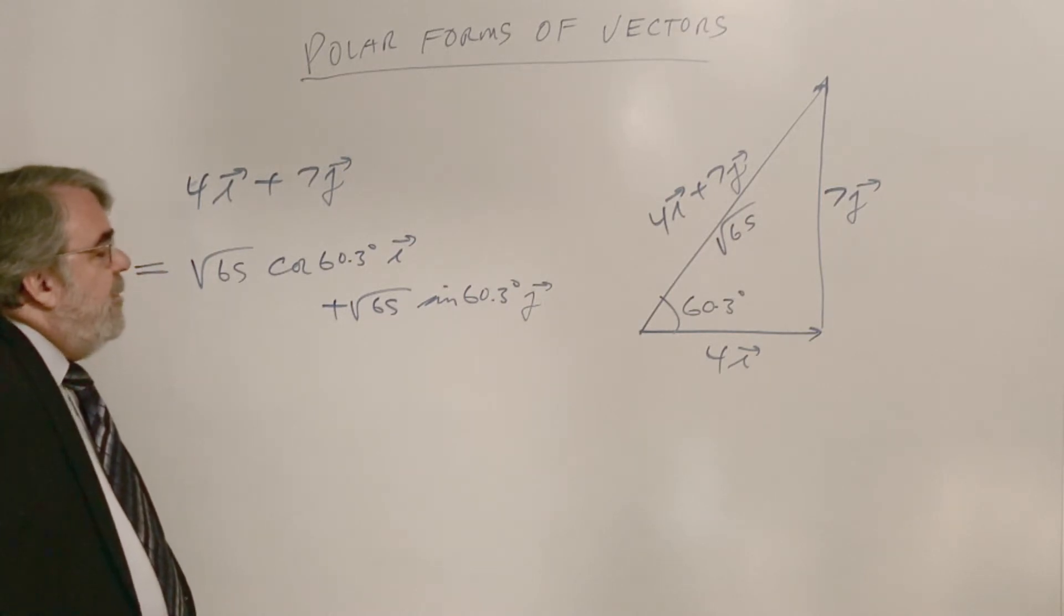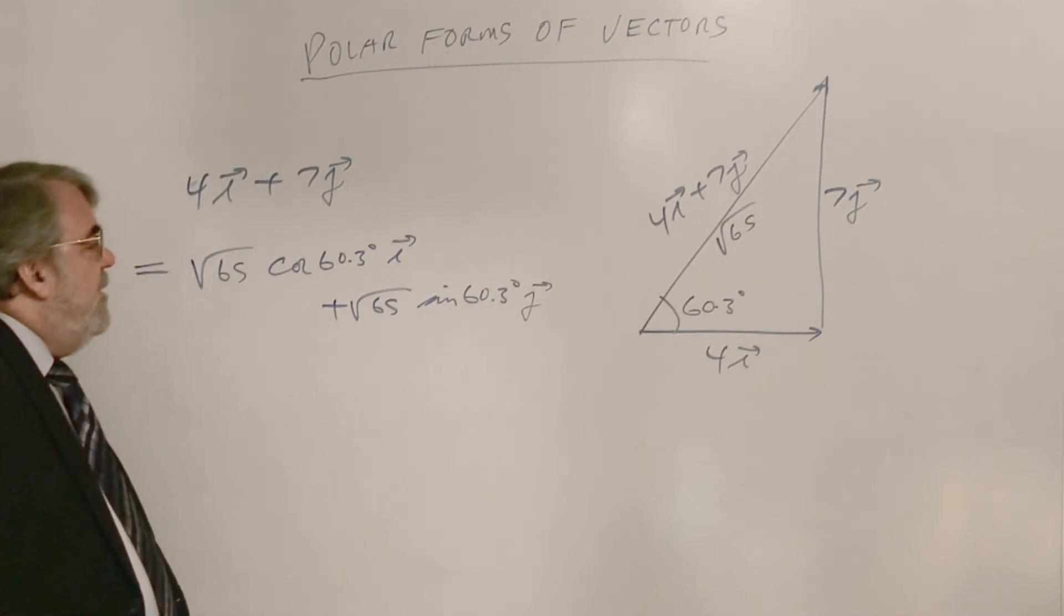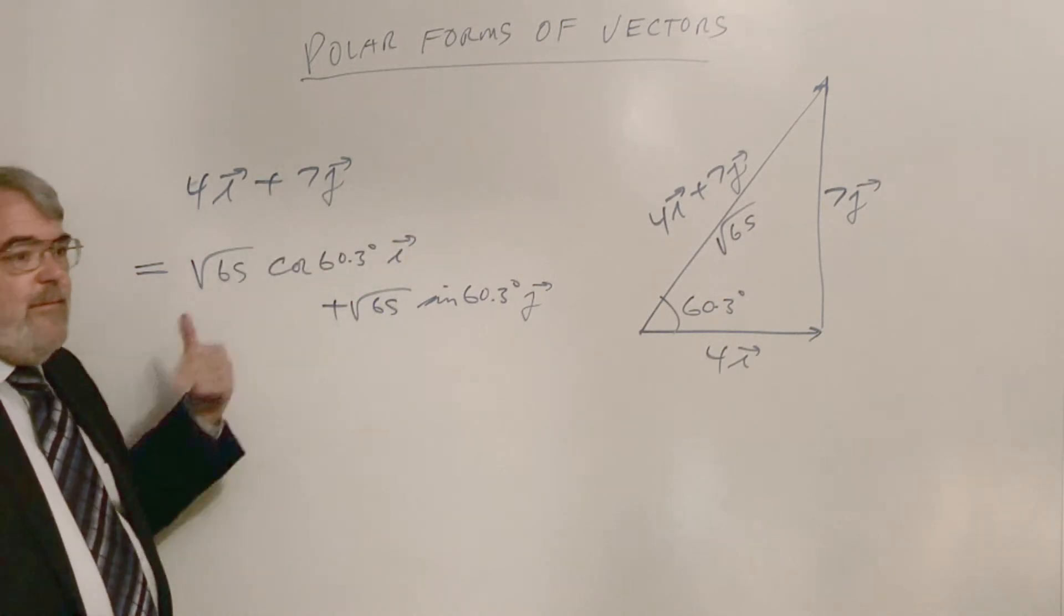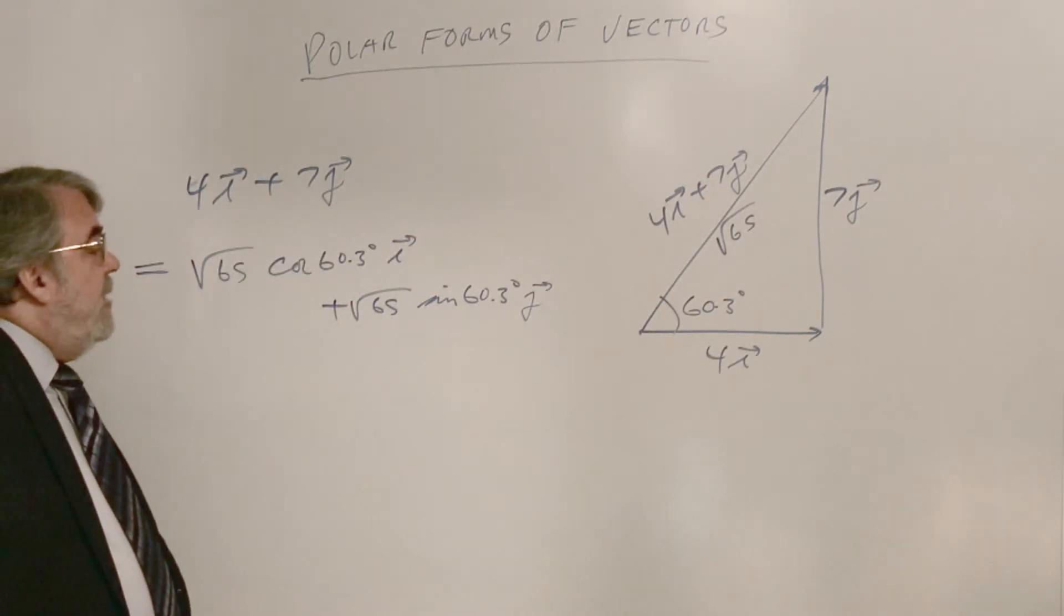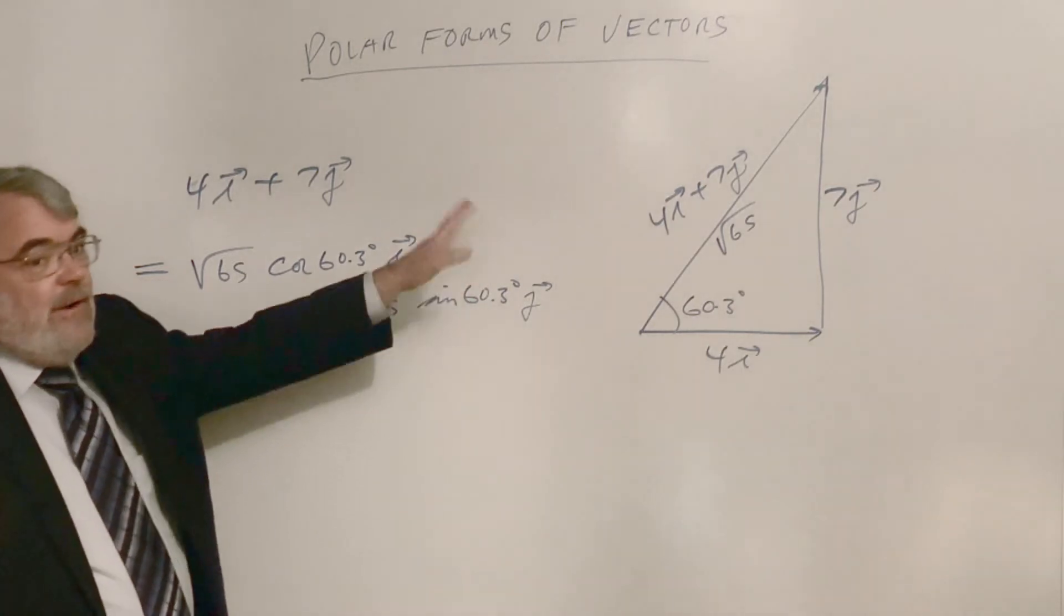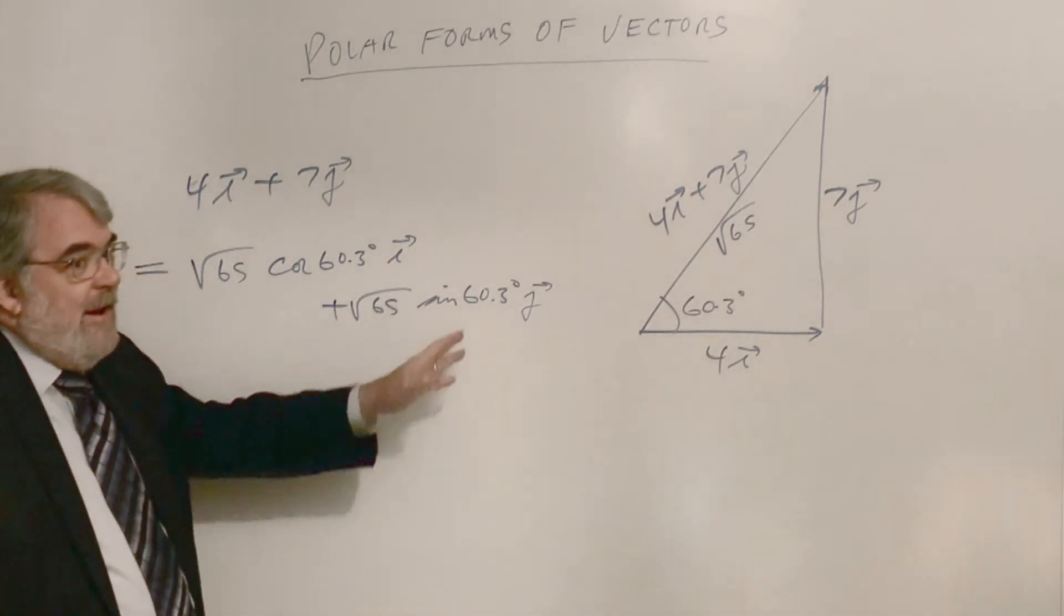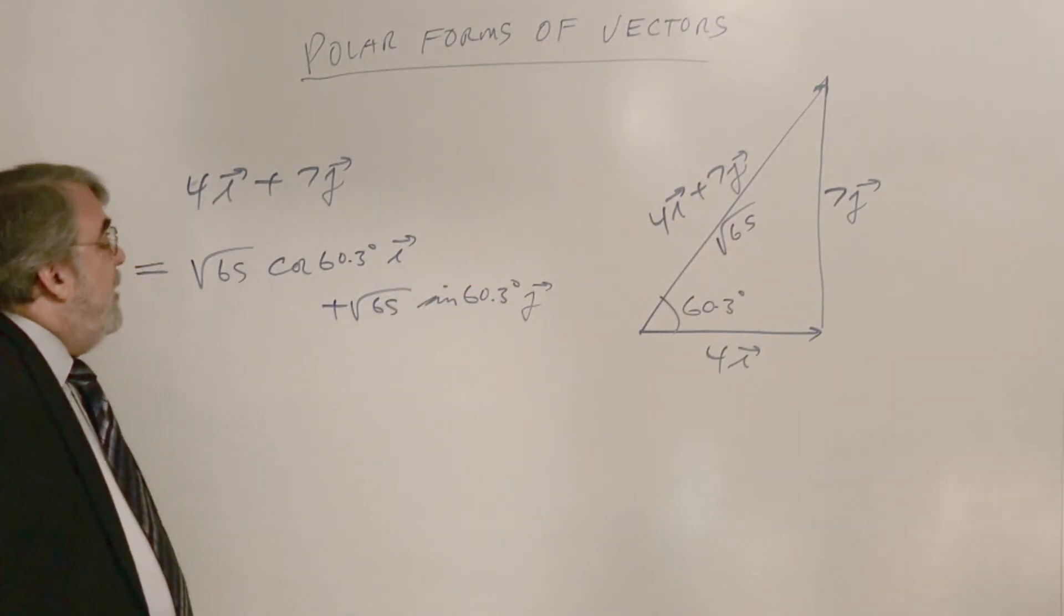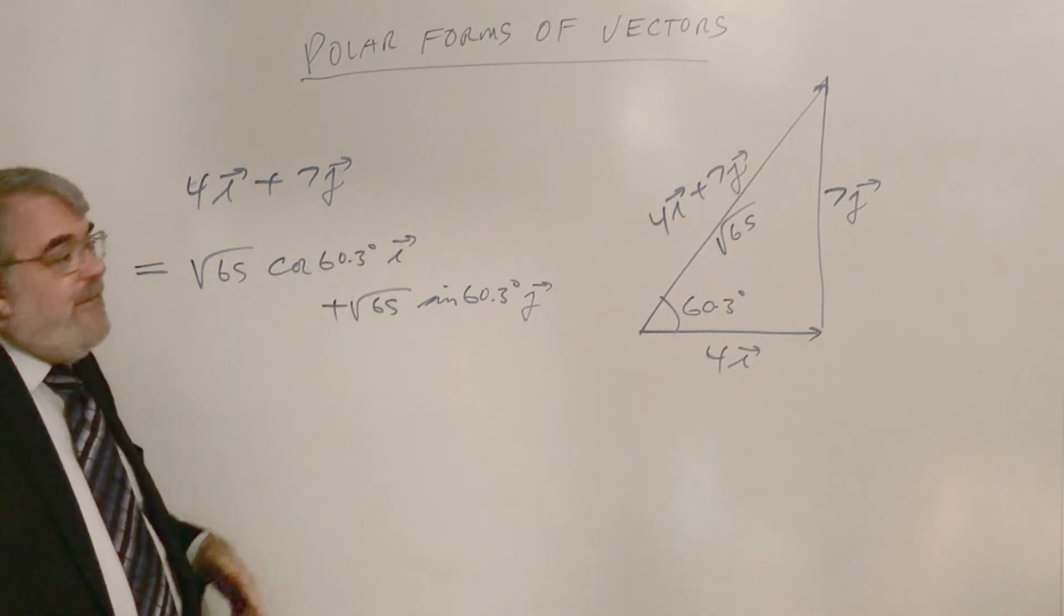And, but in order to do some computations, we have to go back and forth between polar and rectangular form. And like always, you have to pay attention to what quadrants you're in in order to get the angles correct. So that's a polar form of that vector.